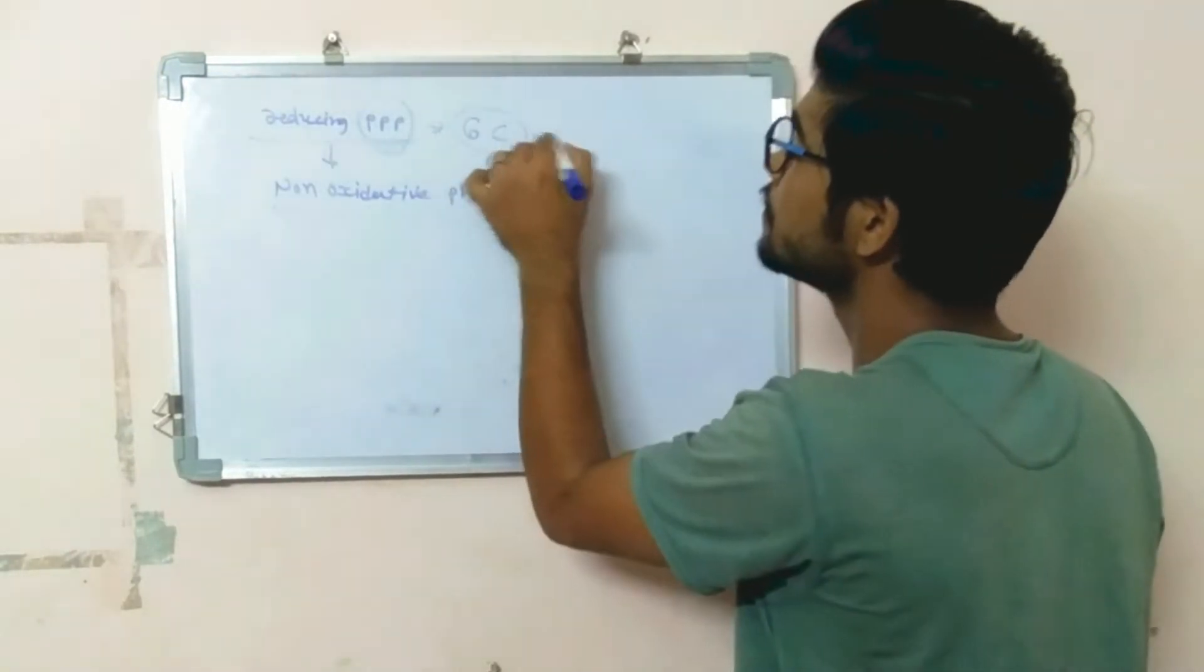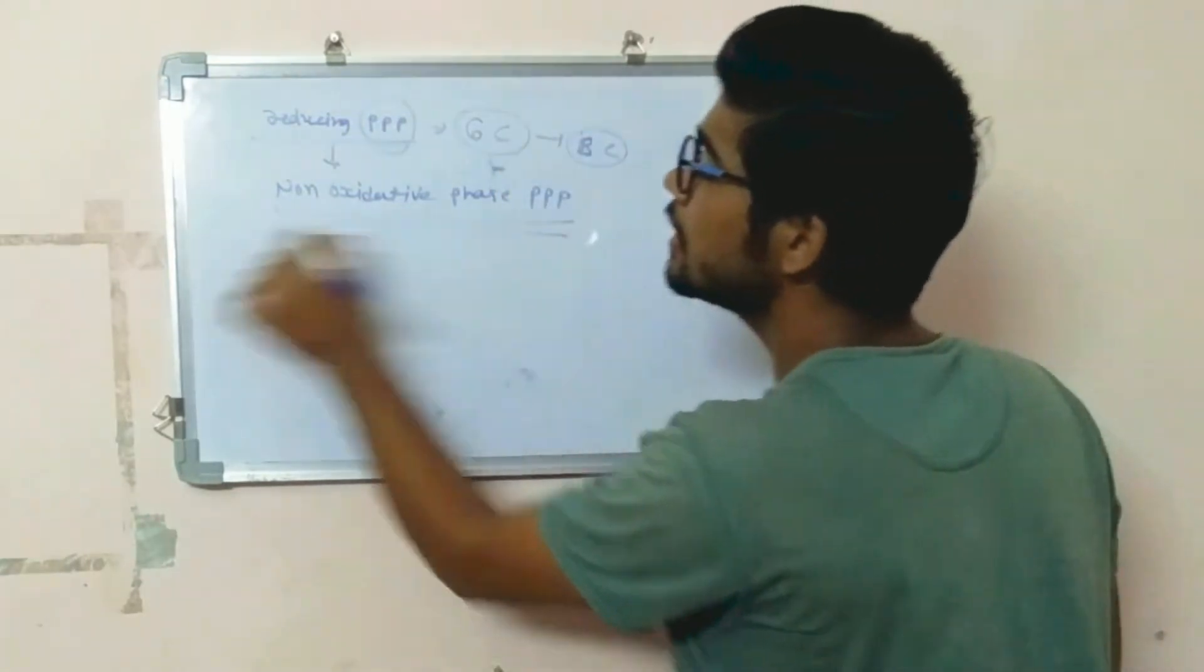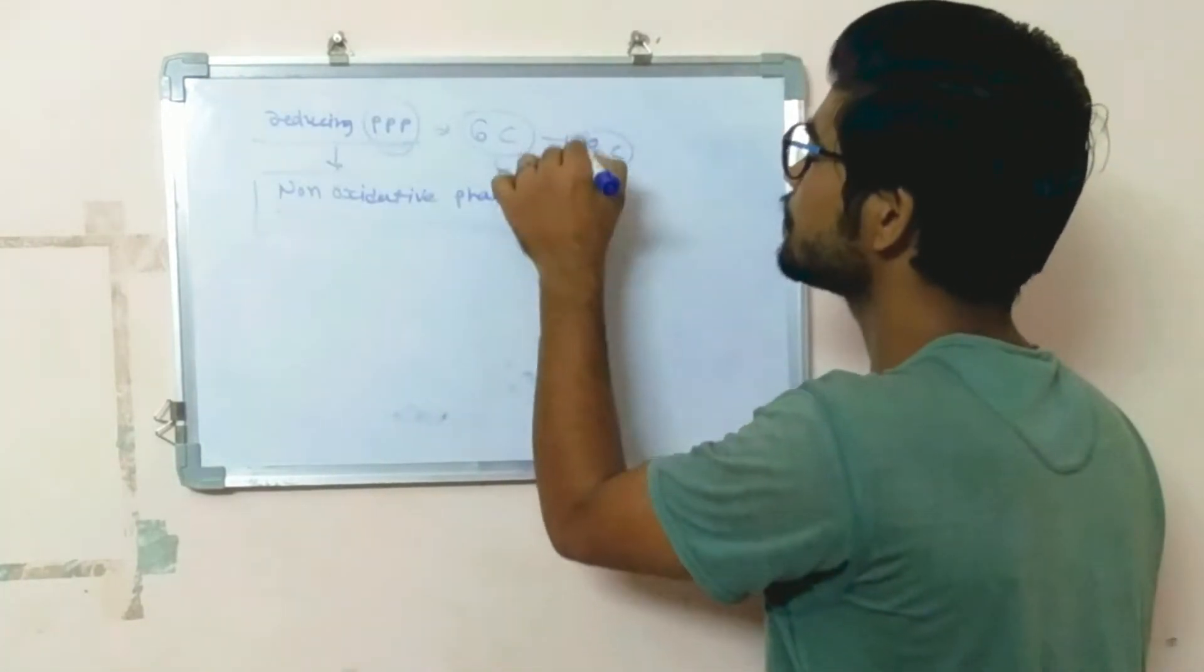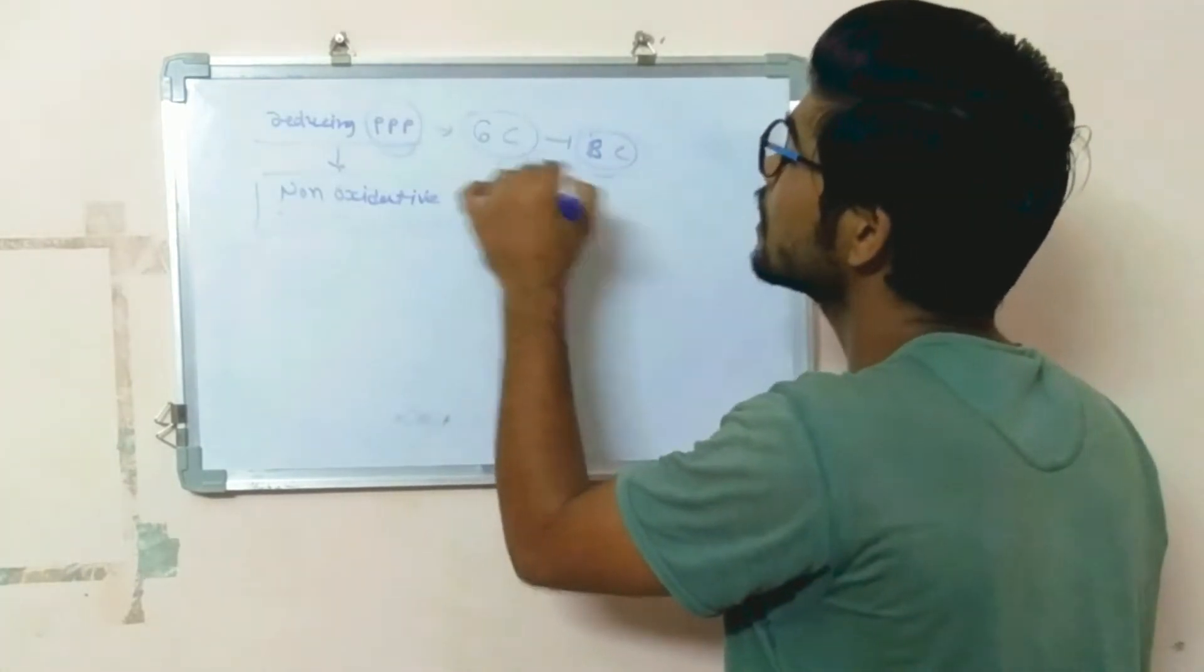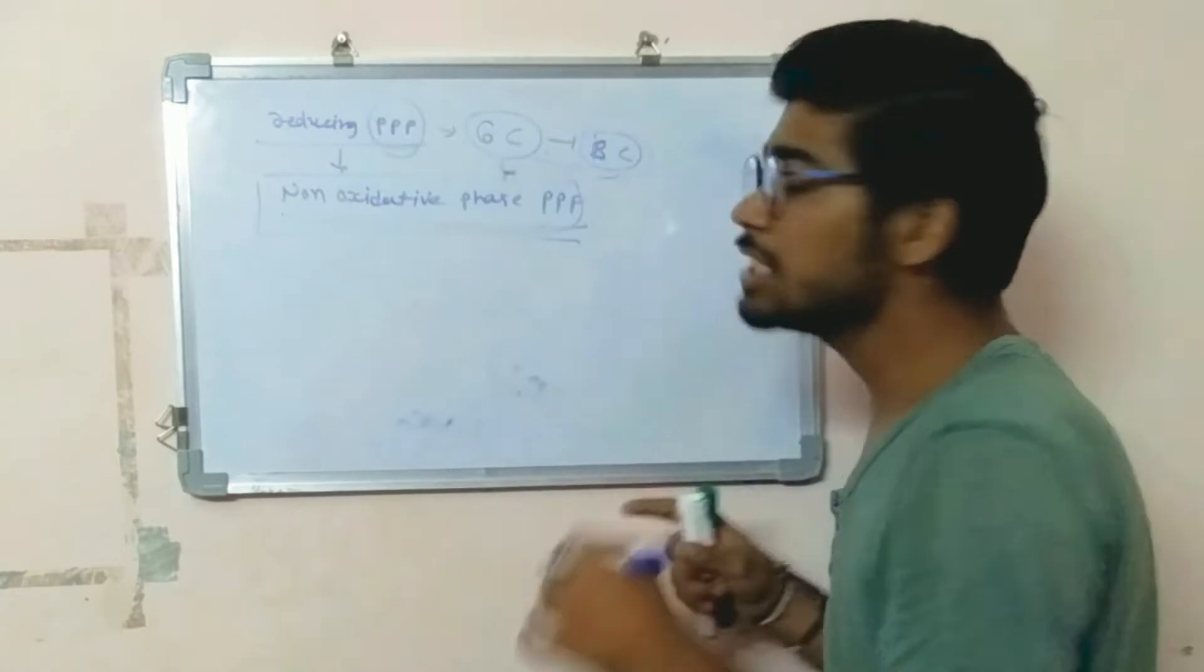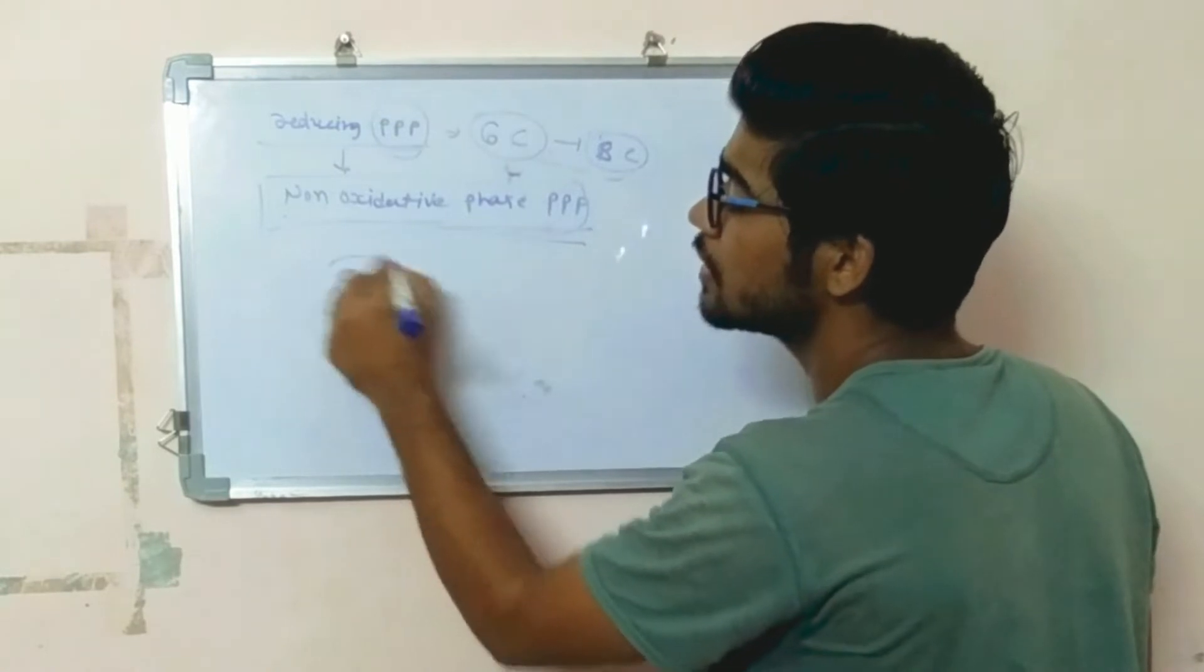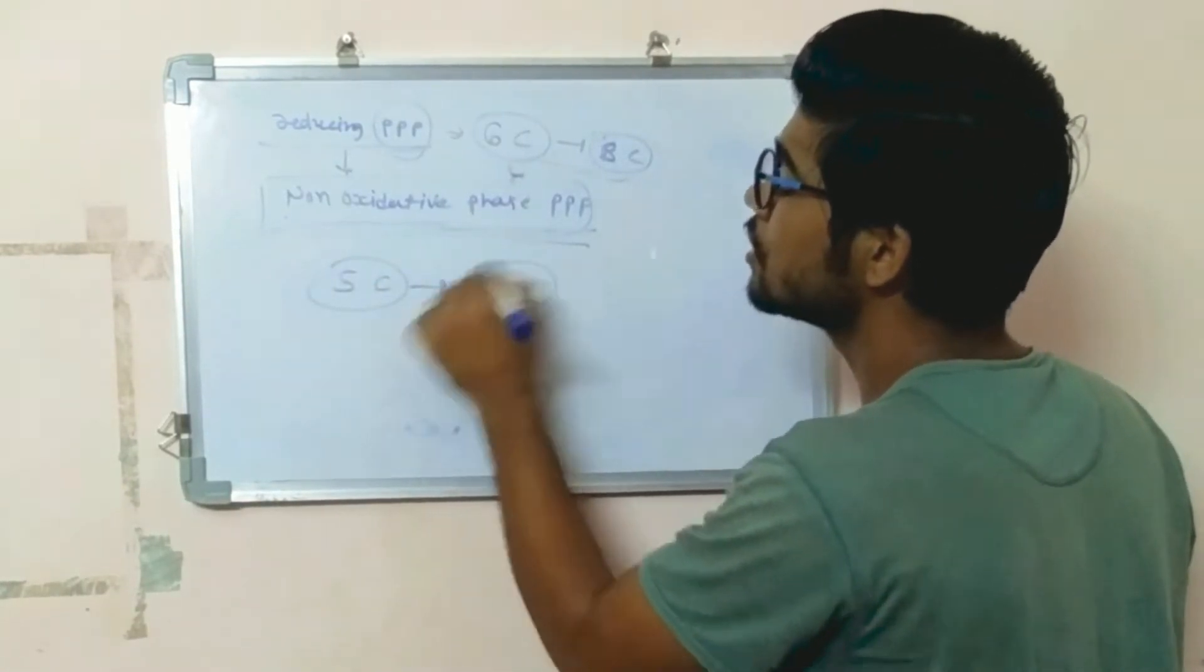In this pathway, after getting the proper or sufficient pentose sugar, the excess amount of pentose sugar can be recycled or converted back into hexose sugar. This pathway is called non-oxidative pentose phosphate pathway in which five-carbon sugar is converted into six-carbon sugar.